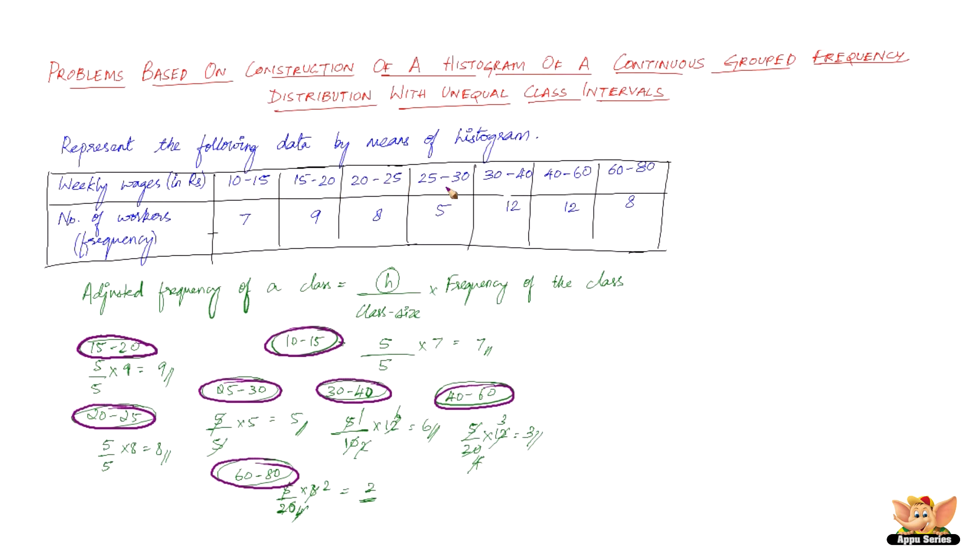So in all we've got 1, 2, 3, 4, 5, 6, 7. So now that we've got the adjusted frequencies that is 9, 8, 7, 5, 2, 6, 3. Of course I didn't tell it in the order. But the order goes like this: 10 to 15, 15 to 20, 20 to 25, 25 to 30, 30 to 40, 40 to 60 and 60 to 80. Now that we have the adjusted frequencies we can go on to draw the graph or the histogram.